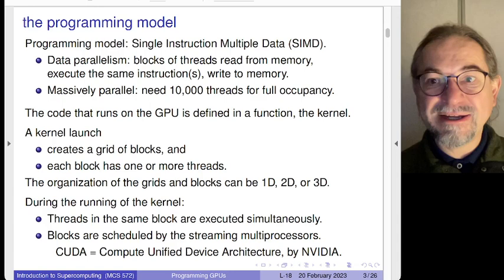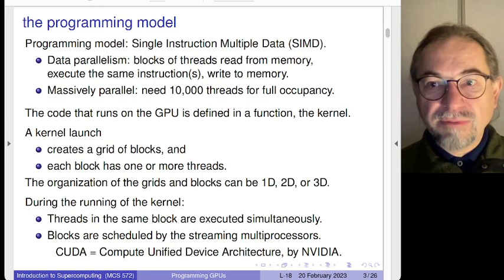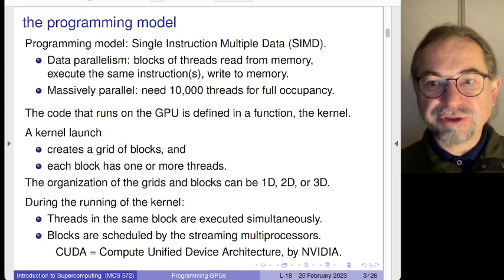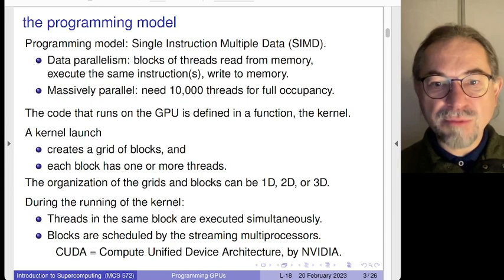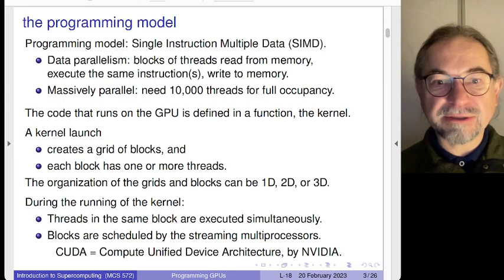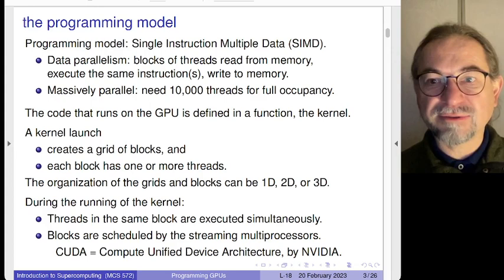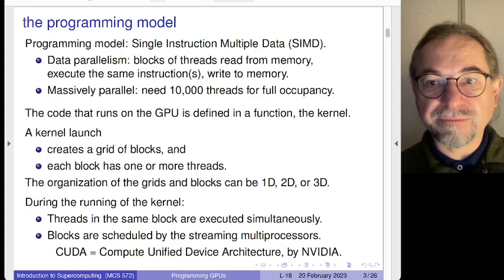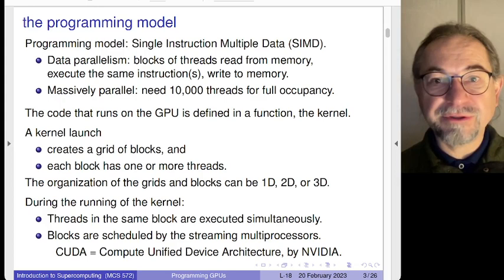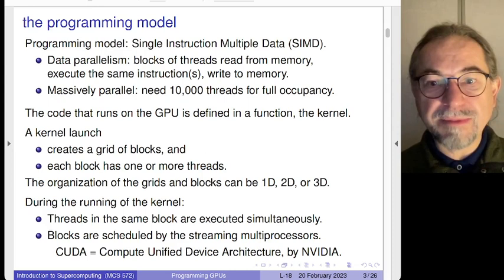Threads in the same blocks execute the same instruction simultaneously. When we described the capabilities of each GPU, we listed the number of streaming multiprocessors and the number of cores per streaming multiprocessor. The examples of today will assume that the compute unified device architecture is available, installed, and operational. This can be downloaded for free from the developer site from NVIDIA. And of course, one must have an NVIDIA GPU working. In later lectures, we may come up with more general alternatives for different types of GPUs.